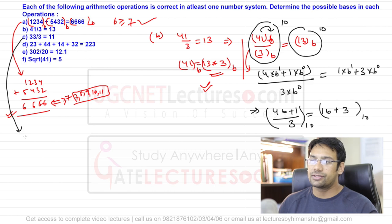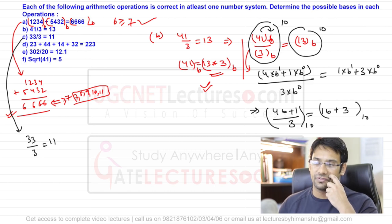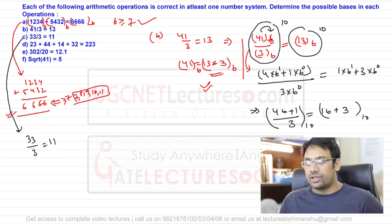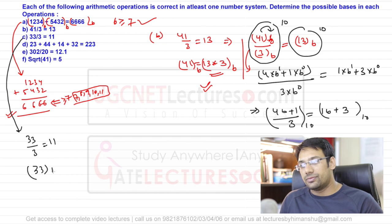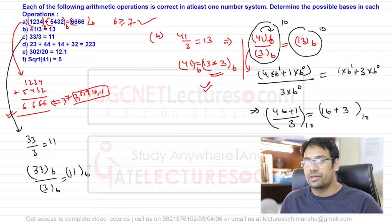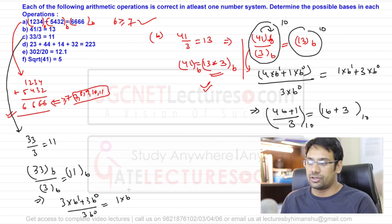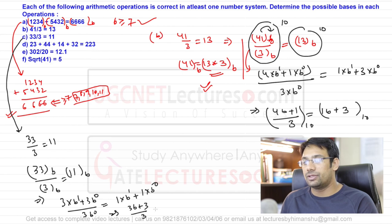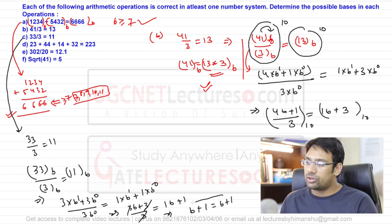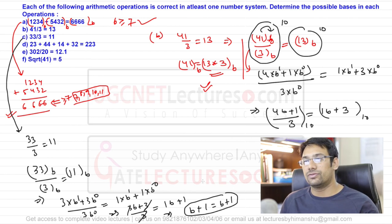Part (c): 33 ÷ 3 = 11. Assuming base b: (3b + 3) ÷ 3 = b + 1. Simplifying the left side: (3b + 3)/3 = b + 1. So we get b + 1 = b + 1, which is always true.